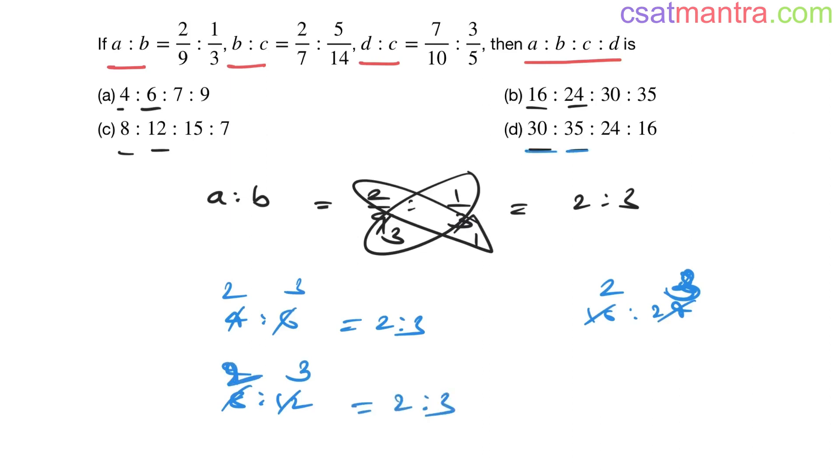Thirty is to thirty-five is not 2 is to 3. Five sixes are thirty, five sevens are thirty-five, so this is 6 is to 7. We are able to eliminate this option now.